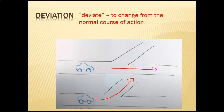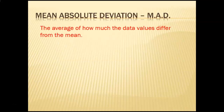So now it's time to put all of those together: mean, absolute, deviation. What that means is the average of how much data values differ from the mean. Mean absolute deviation will tell us the average of how much the data values differ from the mean. Here are the steps we're going to use to calculate mean absolute deviation.